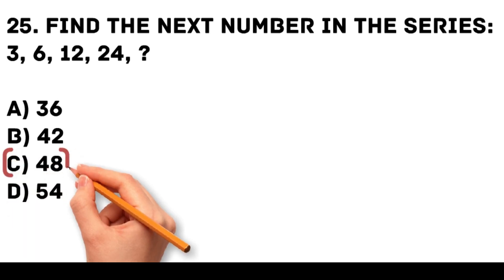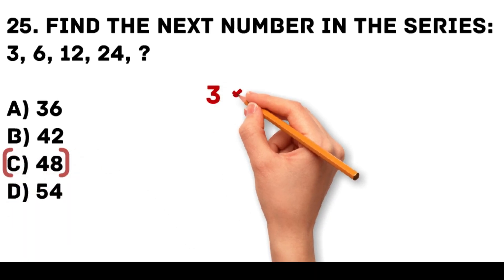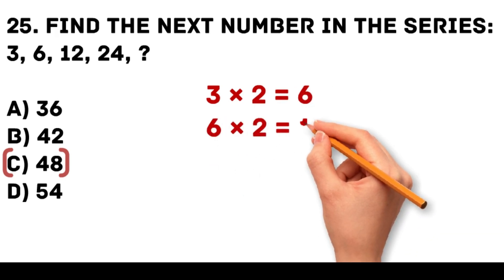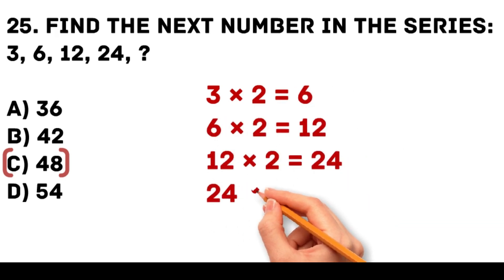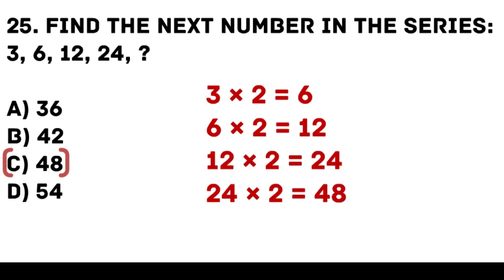Answer: C. 48. Each number in the series is multiplied by 2. 3 times 2 is equal to 6. 6 times 2 is equal to 12. 12 times 2 is equal to 24. 24 times 2 is equal to 48.